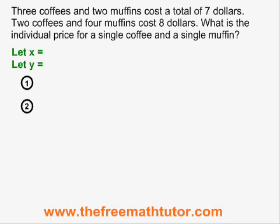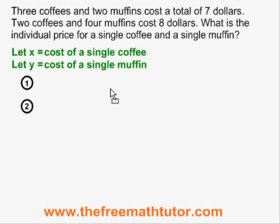The first thing we have to do is define our variables, and our hint for doing that is the question at the end of the problem. What is the individual price for a single coffee and a single muffin tells us that we need to define our variables as: let x equal the cost of a single coffee and let y equal the cost of a single muffin.